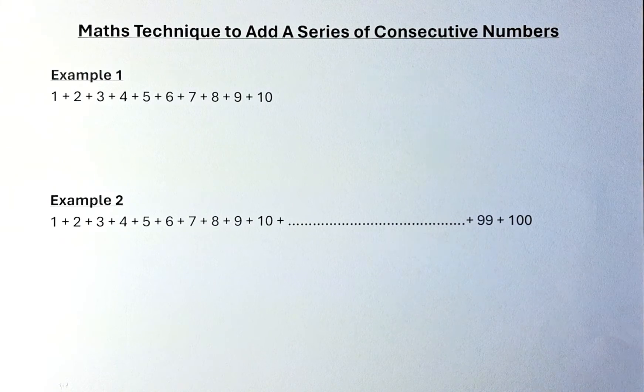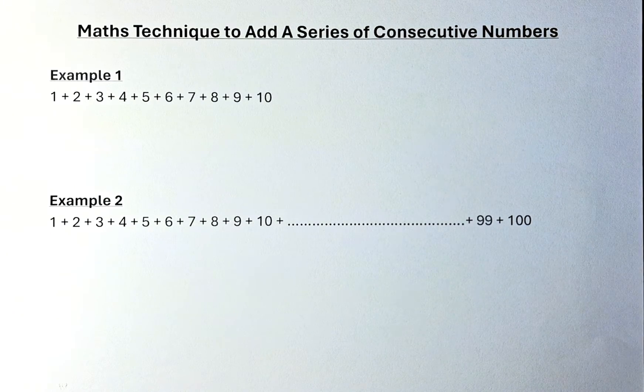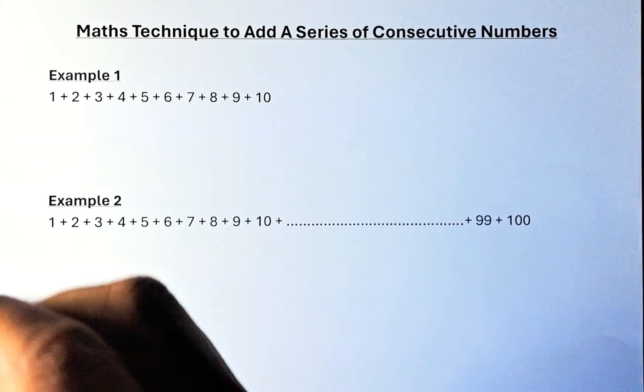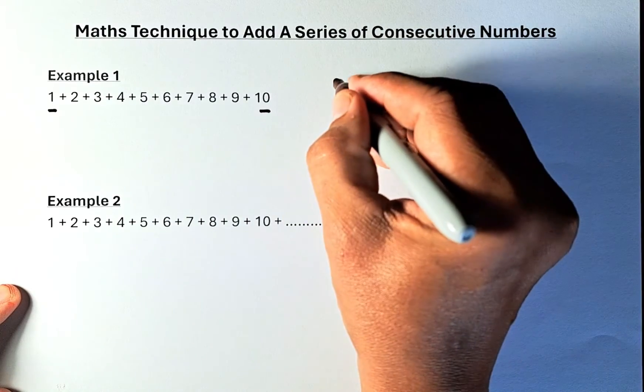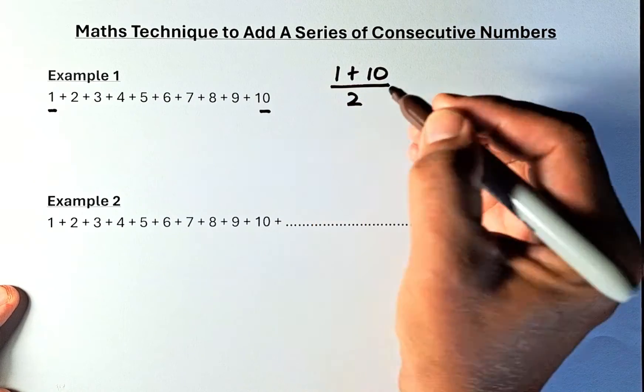So if you want to do this, rather than adding up using your calculator, I'm teaching you a quick method, also the math technique or math trick to do it. So what you do, you're going to take the first number which is 1 and the last number which is 10. So what you're going to do, you take 1 plus 10 and then you're going to average them out, divide by 2.